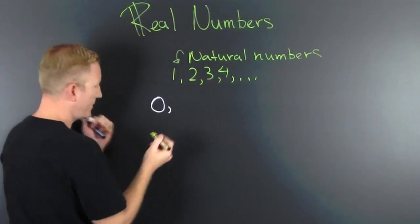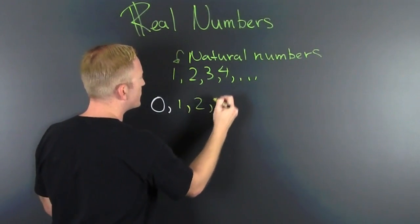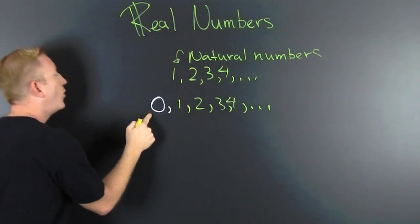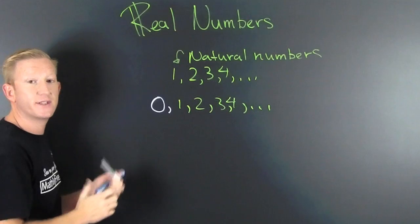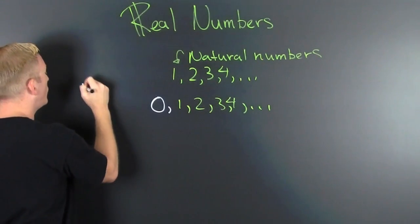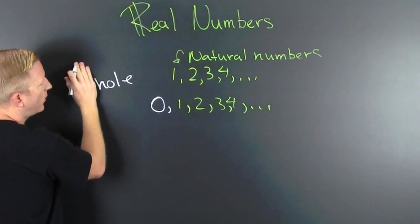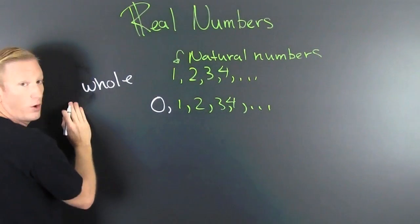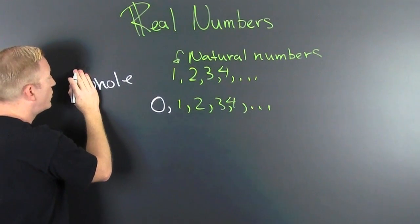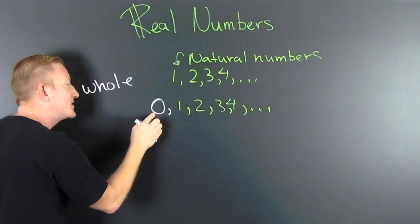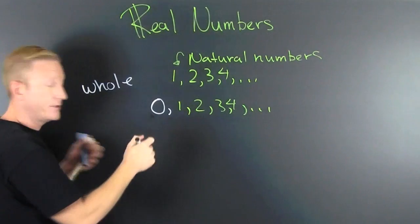If we take those natural numbers and we add a zero to it, if we add a whole to it: zero, one, two, three, four... If we add a whole to it, those are the whole numbers. See how the zero looks like a whole? Those are the whole numbers.